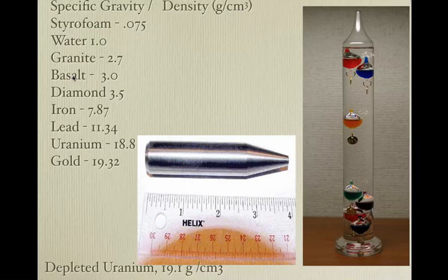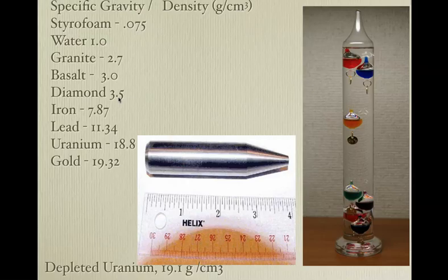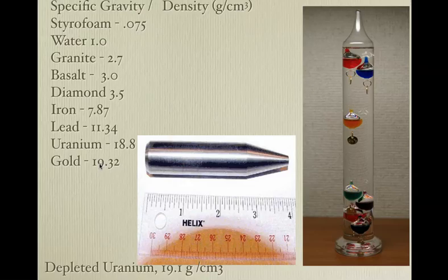Granite is 2.7 g/cm³; basalt is 3.0 g/cm³. This is important: continents tend to be made out of granite, ocean bottoms out of basalt. People think the continents will sink into the oceans — no, no more than Styrofoam is going to sink under water. Diamonds are pretty dense at 3.5 g/cm³. Iron is about 7.8 g/cm³. Lead, 11.34 g/cm³. Uranium is 18.8 g/cm³ and gold is 19.32 g/cm³.